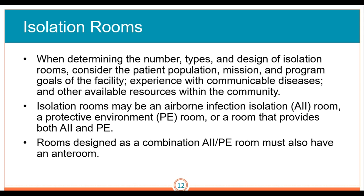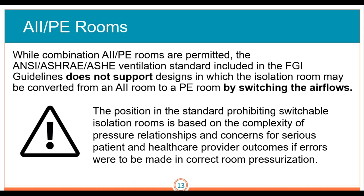Isolation rooms may be an airborne infection isolation room (AII), a protective environment, or a room that provides both AII and a protective environment. Rooms designed as a combination of AII and PE room must also have an ante-room. While combination AII and protective environment rooms are permitted, the ANSI/ASHRAE ventilation standards included in the FGI guidelines do not support designs in which the isolation room may be converted from an AII room to a PE room by switching the air flows. This is due to concerns for serious patient and healthcare provider outcomes if errors were made in correct room pressurization.